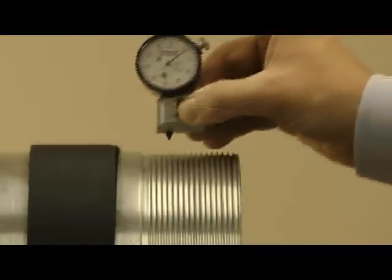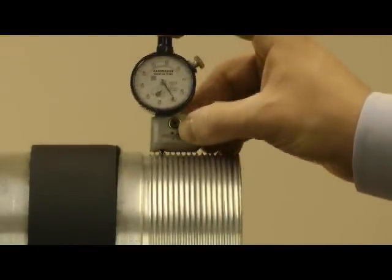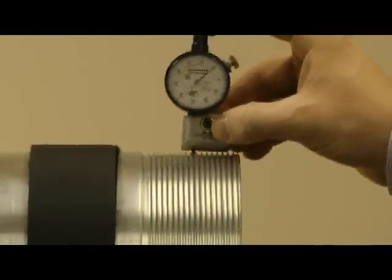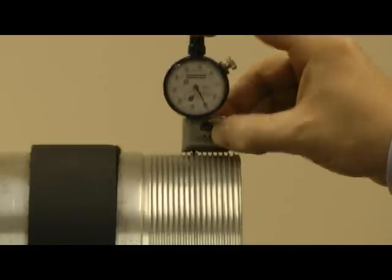After zeroing the thread height gauge on a flat surface, measure the root to crest value at several locations. Rock the gauge front to back, noting the exact reading on the dial.